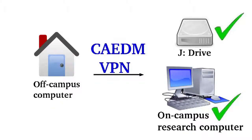Examples of when the VPN might be helpful are when you are off-campus and you would like to access a research computer on campus in a lab where you work, or if you would like to map your J-Drive to your computer.